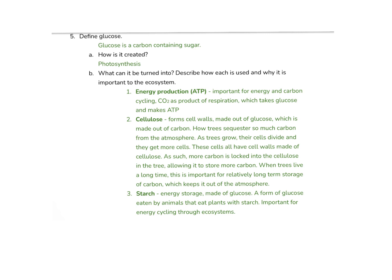What can the glucose then be turned into, and describe how it's used and why it's important to an ecosystem? The glucose can be used immediately for energy production, which is ATP, and this is important for energy and carbon cycling because CO2 is a product of respiration. The glucose is going to be broken down and used to make ATP, which is going to allow the cell to function.